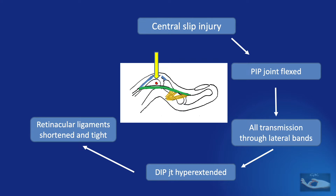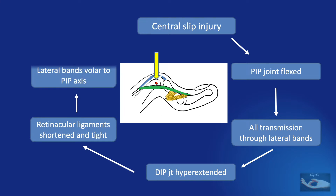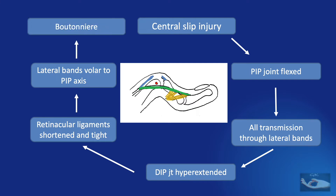Subsequently, the lateral bands slip volar to the proximal interphalangeal joint axis and hence stop being extensors of the PIP joint, becoming flexors of the PIP joint due to their volar position. So now the Boutonniere deformity is well established — all caused by injury to the central slip in trauma.